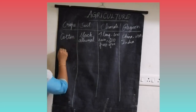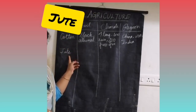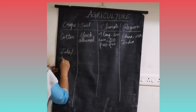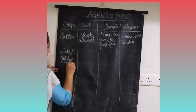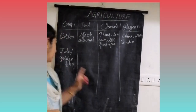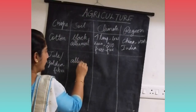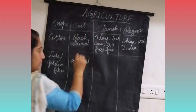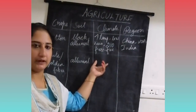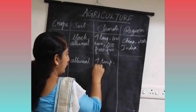The second fiber crop is jute. Jute is otherwise called golden fiber. Jute grows well in alluvial soil. It requires high temperature, heavy rainfall, and humidity.